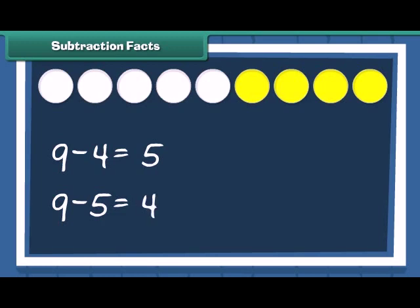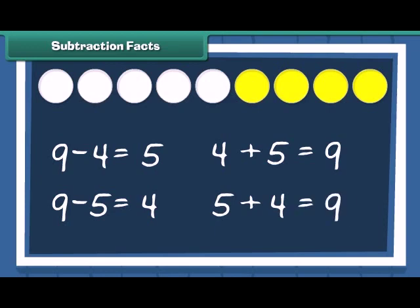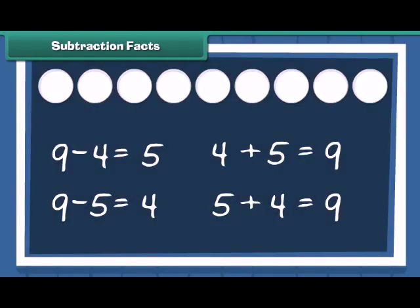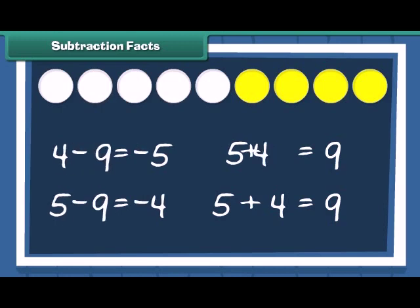Remember the addition fact we looked at a while ago? 4 plus 5 is equal to 9 and 5 plus 4 is equal to 9. Well, for every addition fact, there is a corresponding subtraction fact too. This shows that 3 numbers can be interchanged in addition or subtraction.